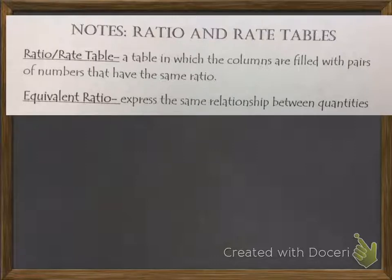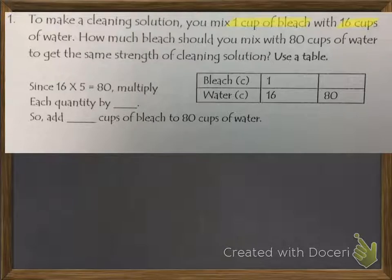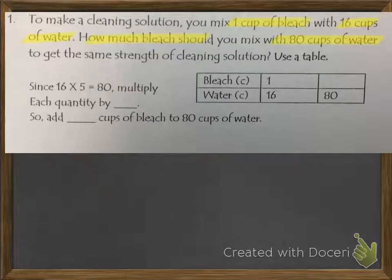So let's see exactly what that means. Our first problem says: to make a cleaning solution, you mix one cup of bleach with 16 cups of water. How much bleach should you mix with 80 cups of water to get the same strength of cleaning solution? So that means it's going to be consistent — it's equivalent.